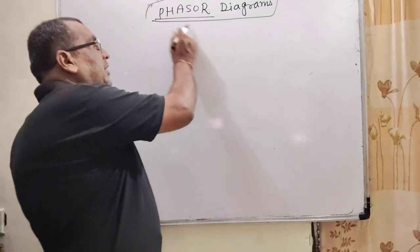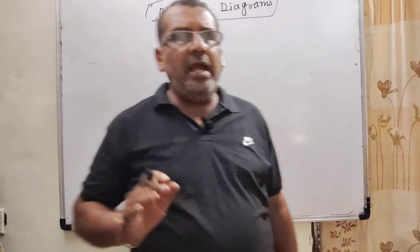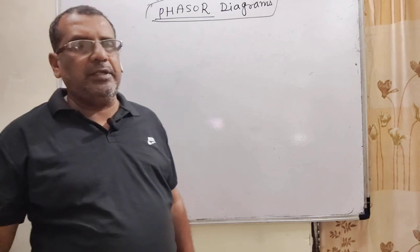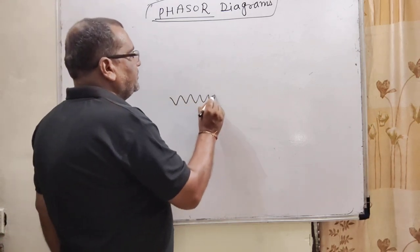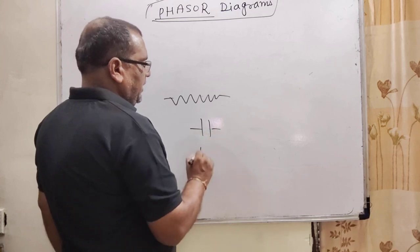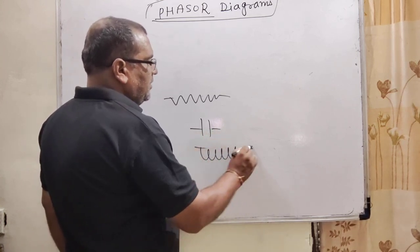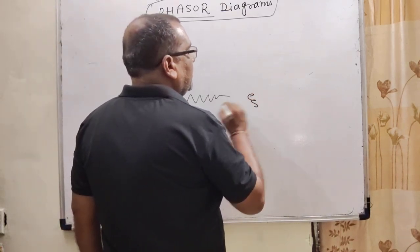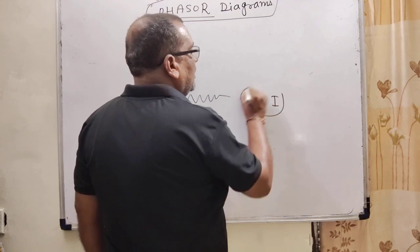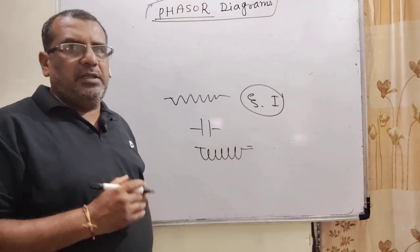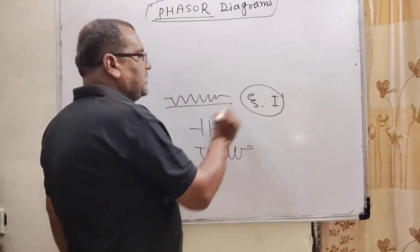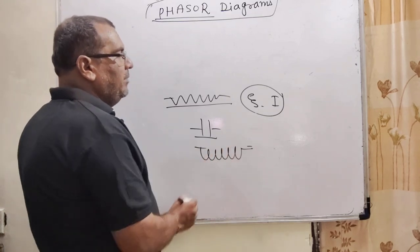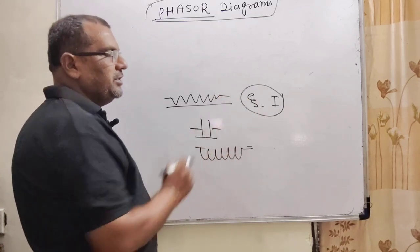अब हम phasor diagram को समझते हैं। phasor diagram का कोई direct question नहीं पूछा जाता लेकिन जितने भी devices हम use करते हैं — जैसे resistance, capacitor, inductance, coil — जब हम इन्हें circuit में use करते हैं, उस समय potential (EMF) और current साथ-साथ नहीं चलते। Resistance में साथ-साथ चलते हैं, capacitor में current आगे चलता है, और inductance coil में potential आगे चलता है और current पीछे चलता है।